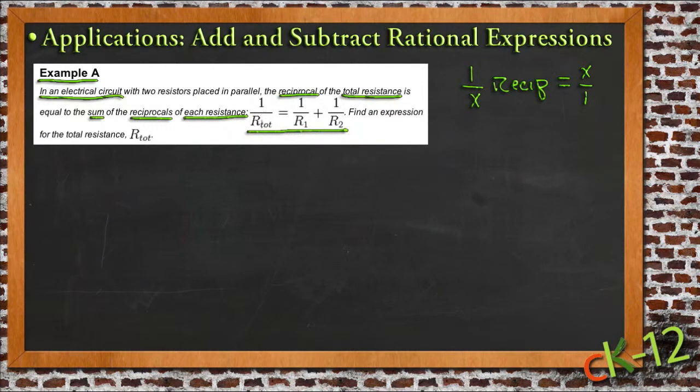The reciprocal of the total, so the total flipped over, so instead of just the total over 1, the resistance total over 1 would have been sort of the standard version, and the reciprocal is 1 over top of that, right? Is equal to the reciprocal of each resistance added together. So our first resistance, R1, added to our second resistance, R2.